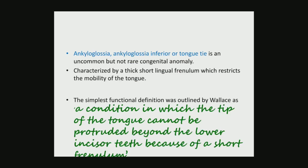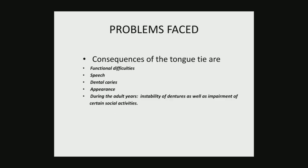Ankyloglossia is also called tongue tie. It is not a congenital abnormality. It is characterized by a thick, short lingual frenum which restricts the movement of the tongue. In the simplest way, this condition is explained as the tip of the tongue cannot be protruded beyond the lower incisors because of the shortened frenum.